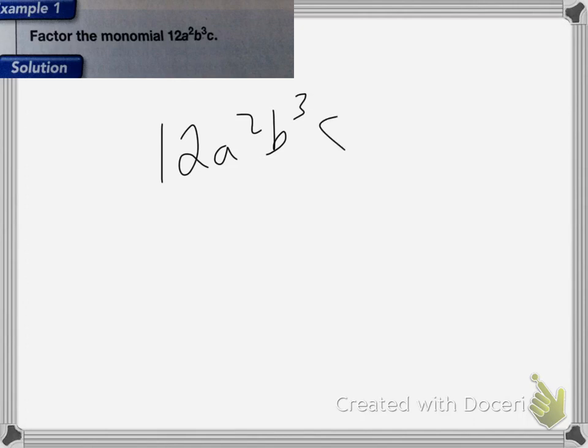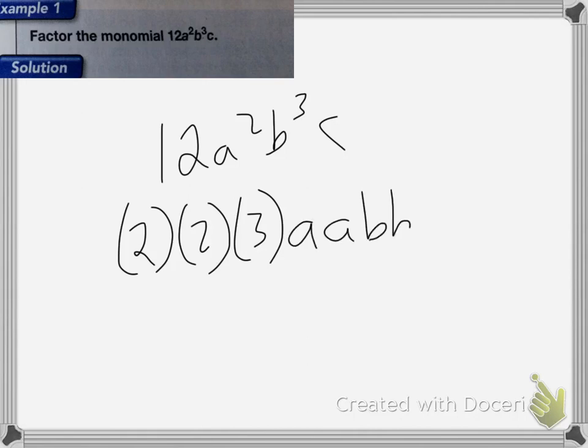So we're going to factor 12 as 2 times 2 times 3, and we factor the a squared b cubed c as a, a, b, b, b, c, c. Just 1c, okay?